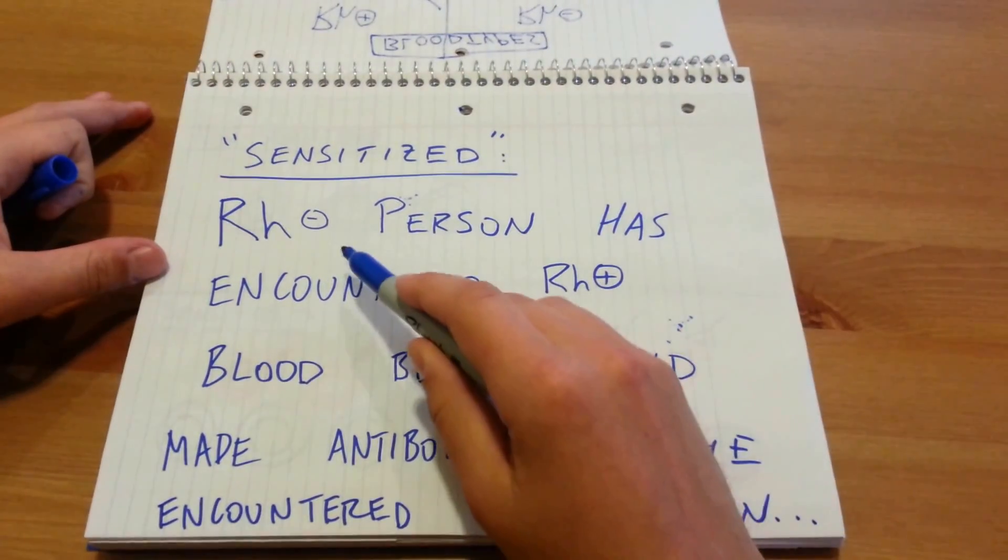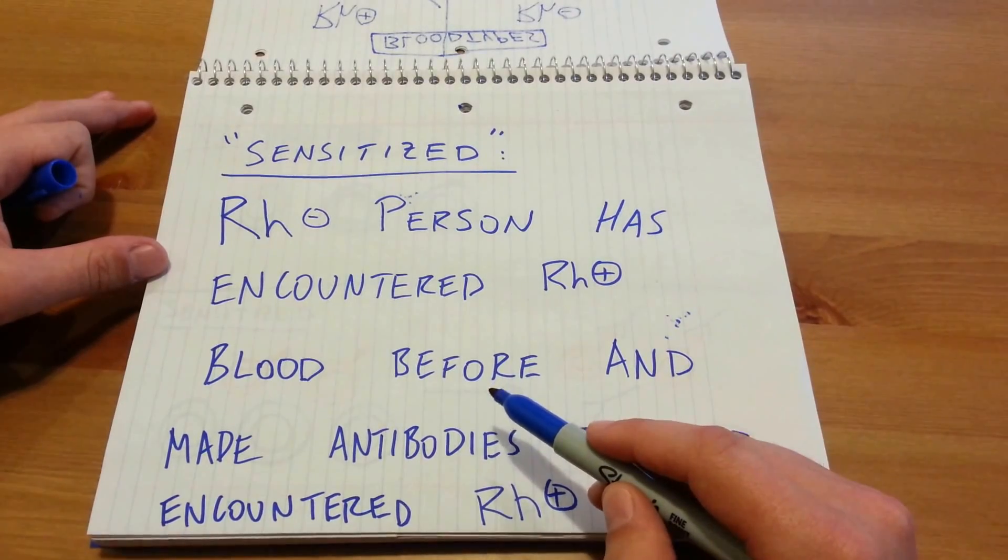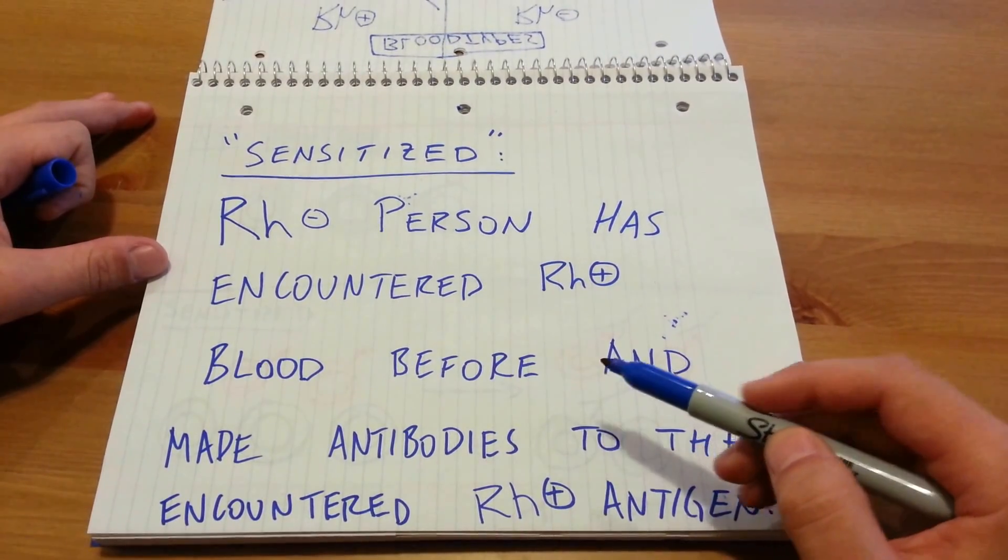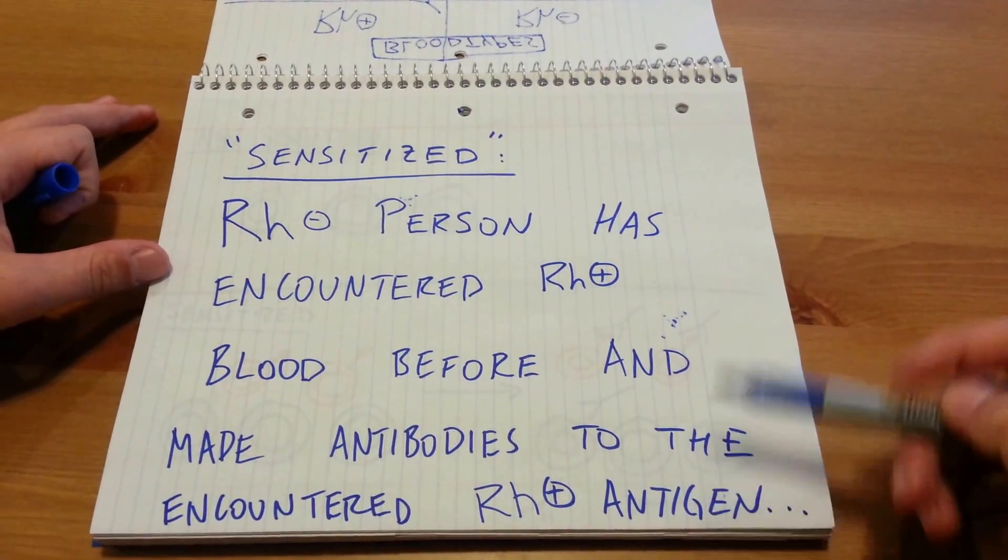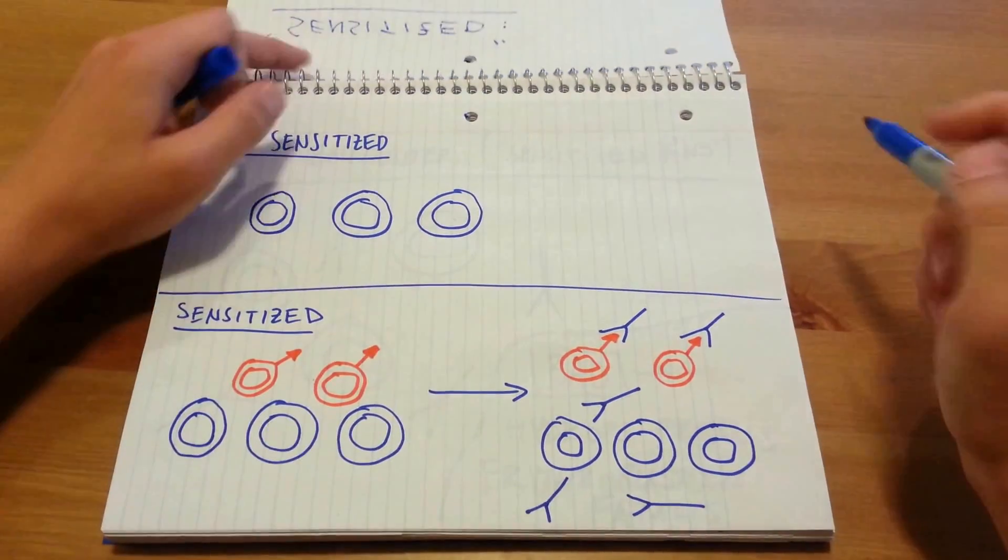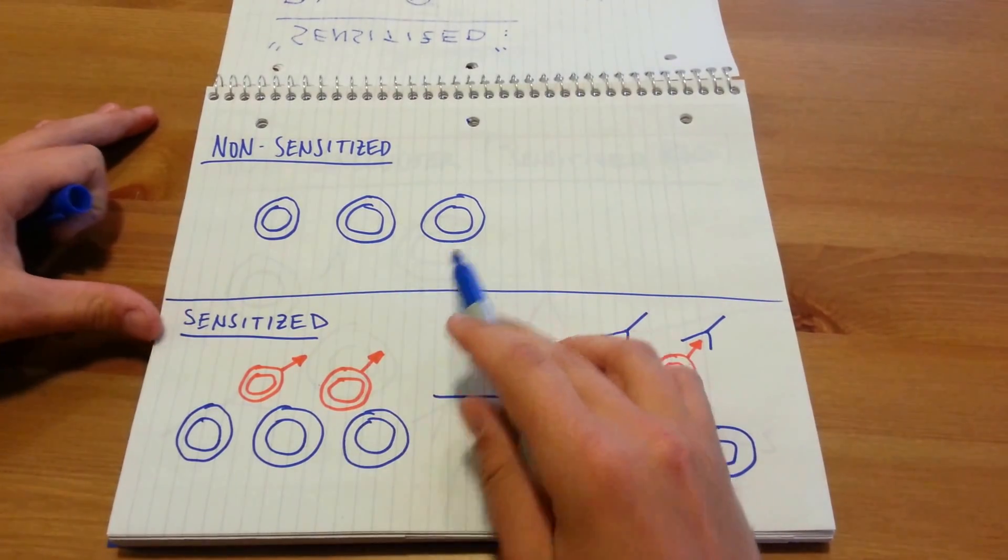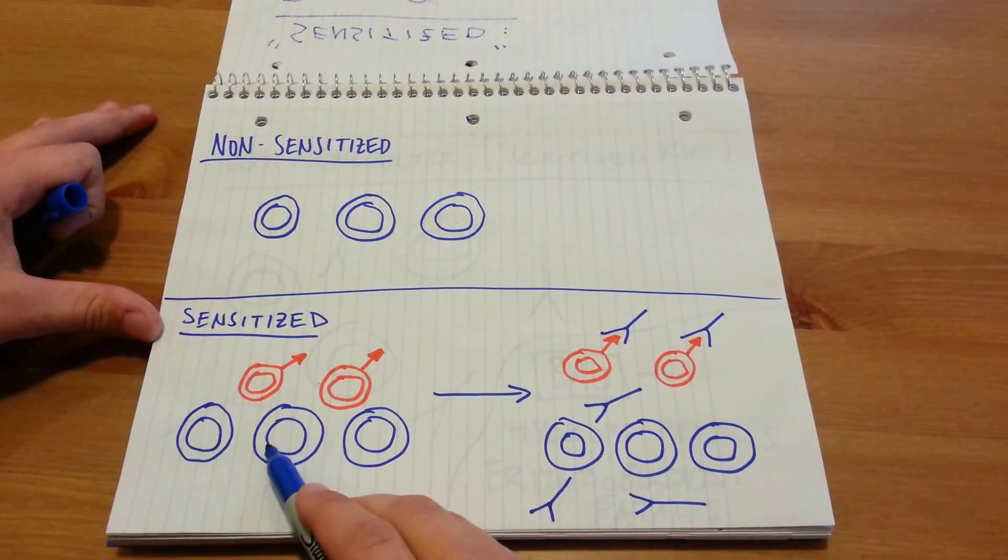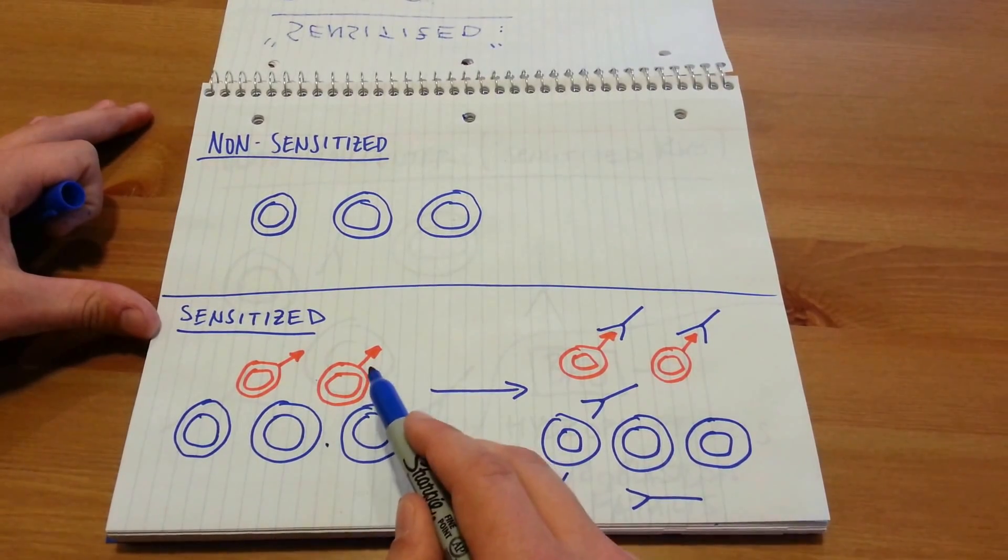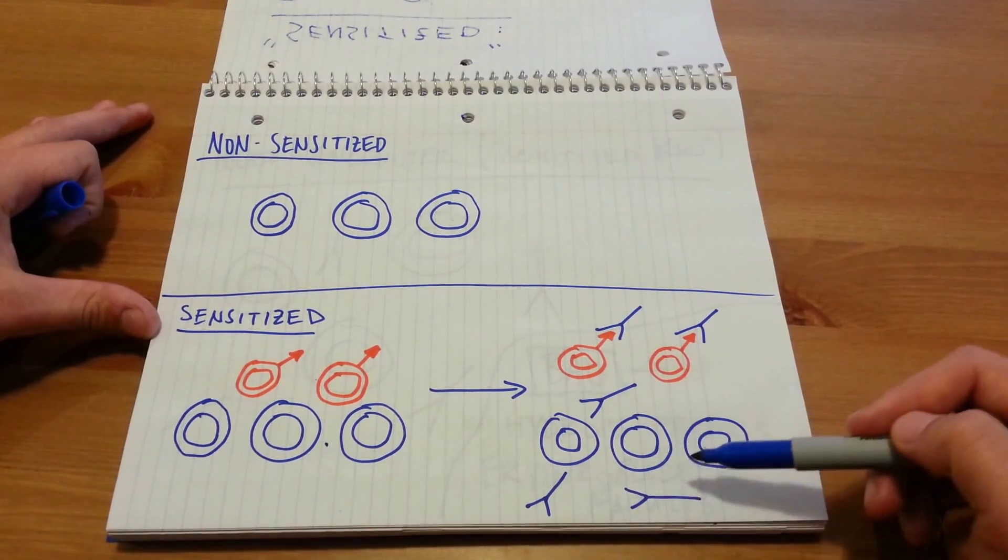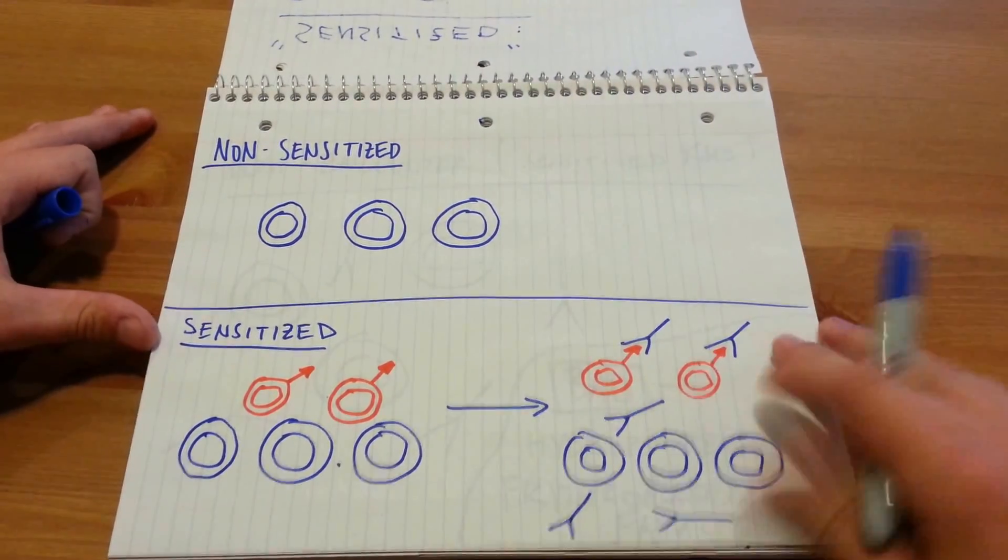So sensitization, that's when an RH negative person has encountered RH positive blood through like a blood transfusion or through pregnancy where their blood is mixing with the fetus's blood. And thus, they make antibodies to this foreign or the encountered RH positive antigen on the foreign bloodstream. Here it is symbolically. So non-sensitized blood before sensitization, there's no antigen, no antibodies. Sensitized blood is the person's blood cells and then a donor or the fetus's blood cells, which you can notice here have the RH antigen. And so thus, the RH negative bloodstream now has antibodies because this is technically foreign blood. Thus, the antigens are foreign. So we make antibodies to attack it.